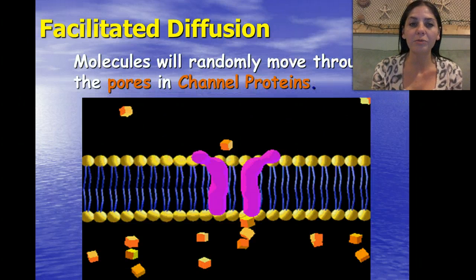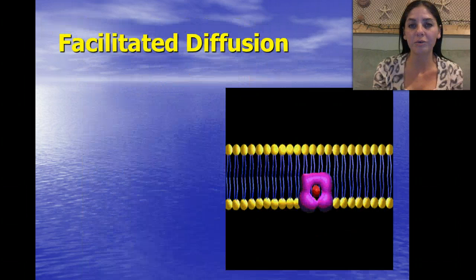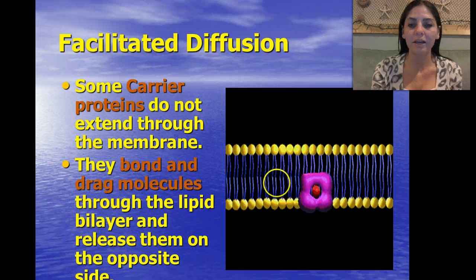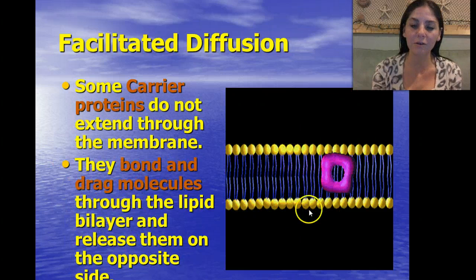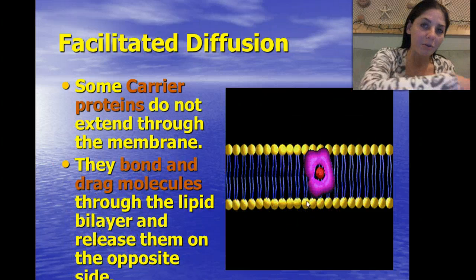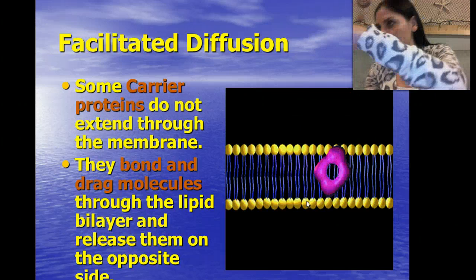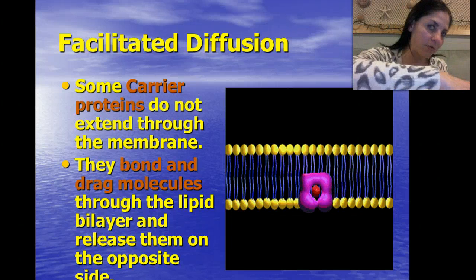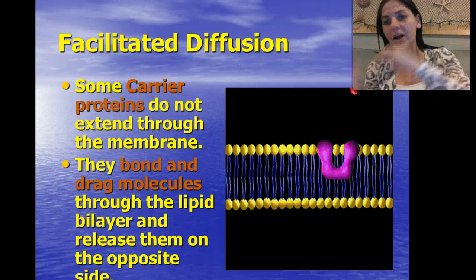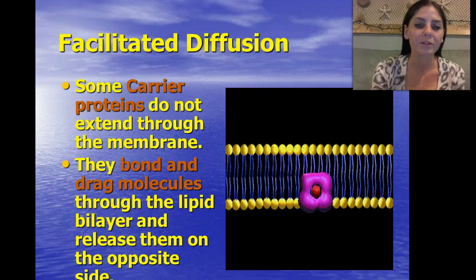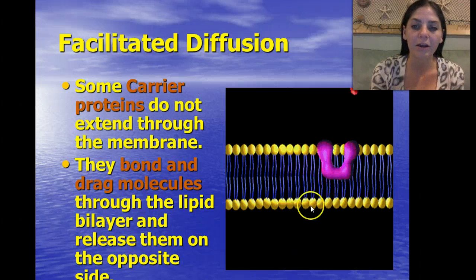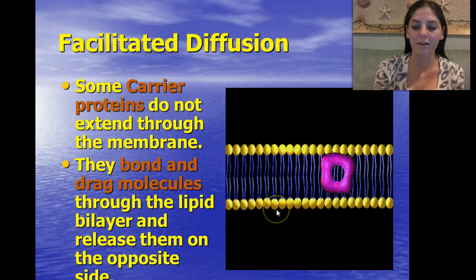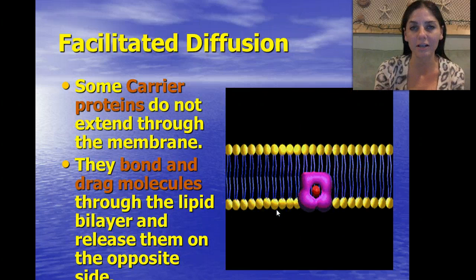Molecules will randomly move through the pores and channel proteins. Another type of facilitated diffusion is a carrier protein. They start off at one end of the membrane, grab the molecule, and transport it to the other side. They bond with the molecule and then drag it across the membrane to the other side. That's another type of facilitated diffusion.